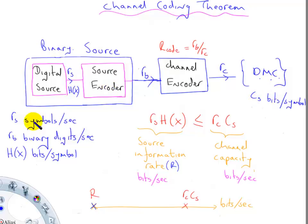RS here is symbols per second, RB is binary digits per second, and this is the source entropy.